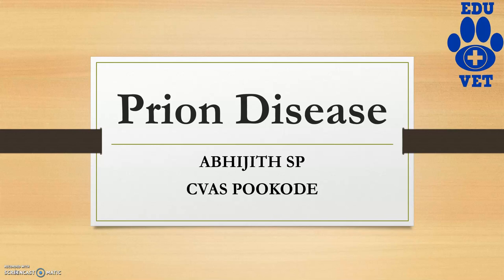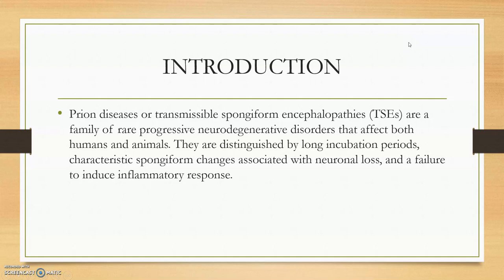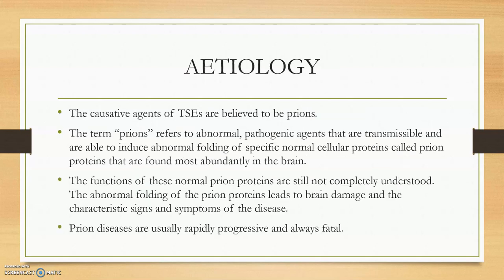Prion disease, or transmissible spongiform encephalopathy, is a family of rare progressive neurodegenerative disorders — meaning neurons will be degenerated, that is breaking down. They involve neuronal lesions, neuronal manifestations, neuronal loss, and a failure of inflammatory response. The causative agents are prions, a term coined by Stanley Prusiner around 1972.